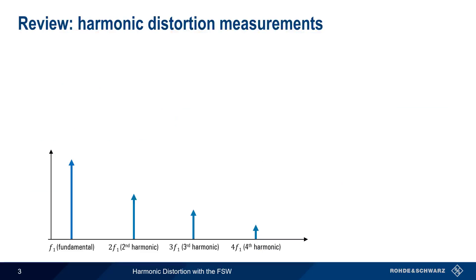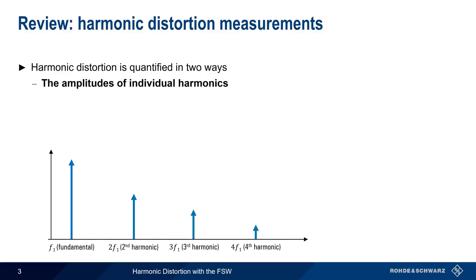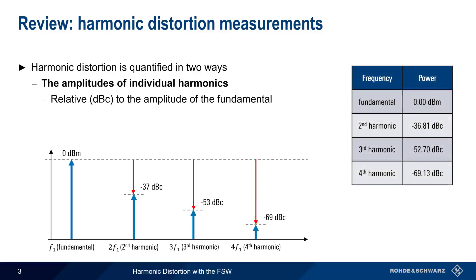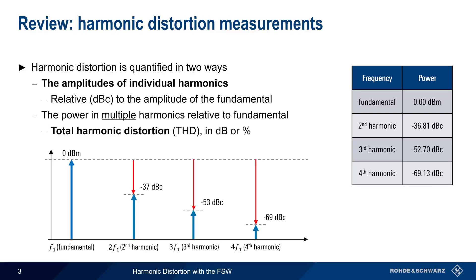Harmonic distortion can be quantified in two ways. The first is the amplitude of the individual harmonics, normally reported as powers relative to the fundamental, so units are typically dBc, or decibels down from the fundamental carrier. In this example, the amplitude of the fundamental is measured as an absolute power in dBm, but the power of each harmonic is reported in dBc relative to this power. The other way is as the combined power in multiple harmonics relative to the fundamental, referred to as total harmonic distortion, reported either as a percentage or in dB.